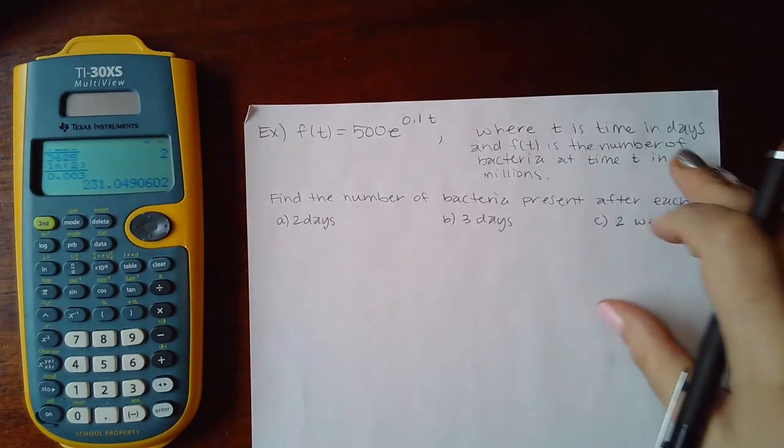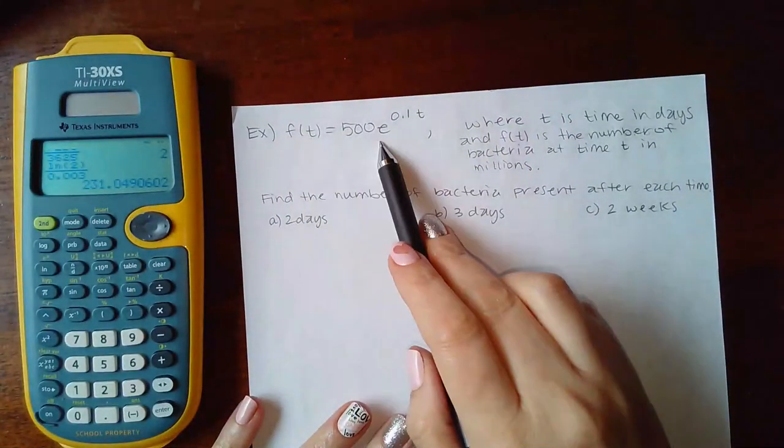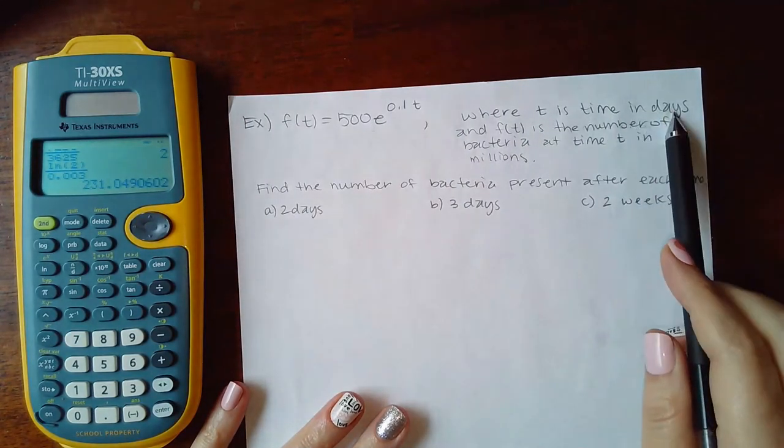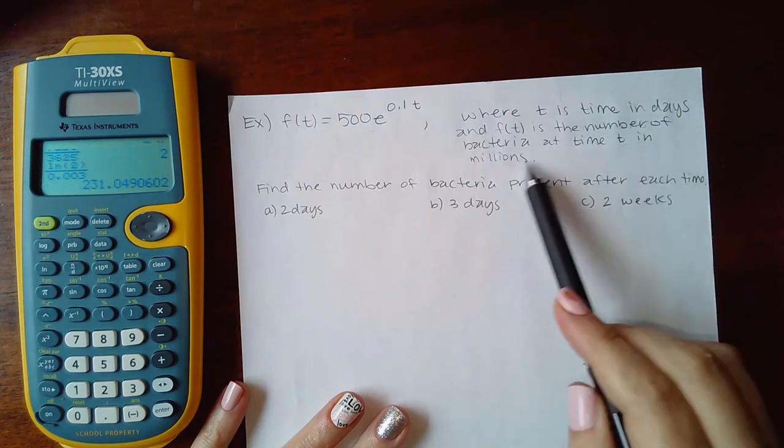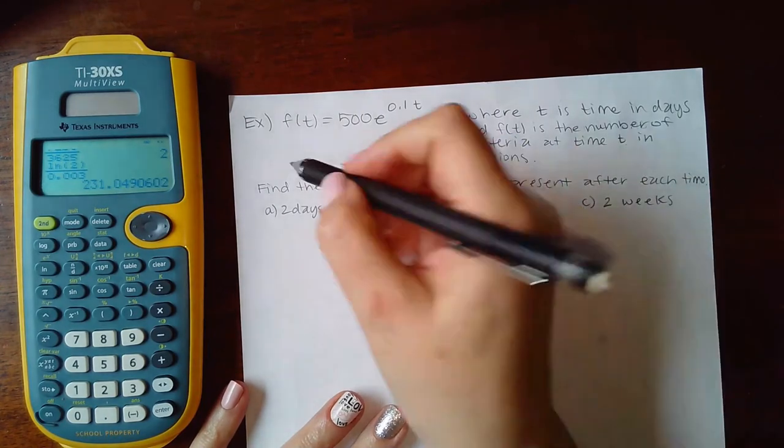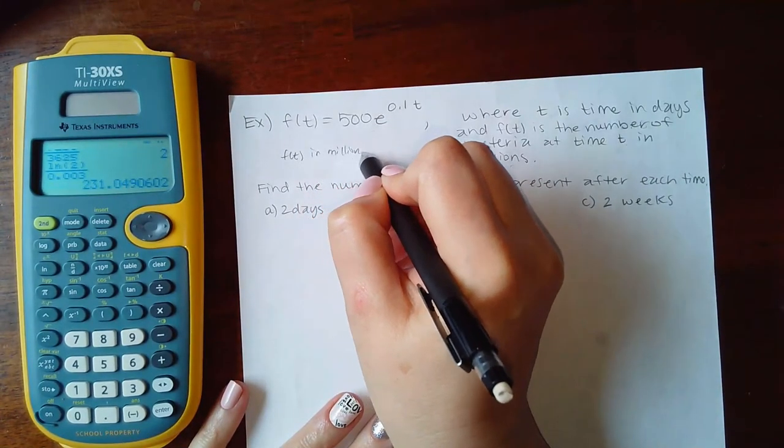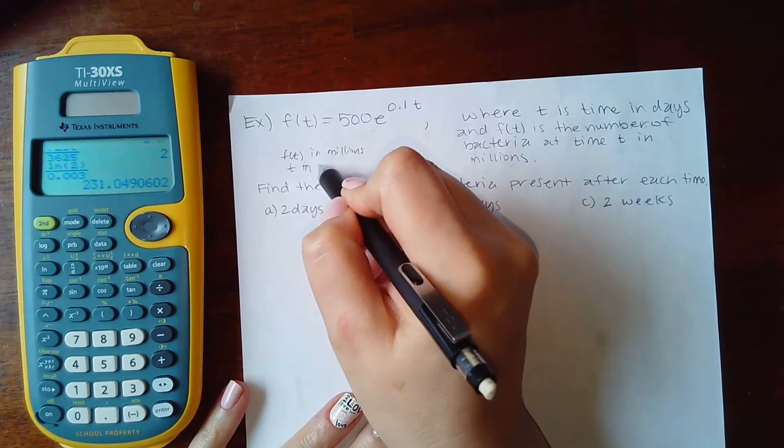Now we're on the last one. So this one gives us a function here and it says in this function t is the time in days and f(t) is the number of bacteria at time t in millions. So f(t) is in millions, which means the y value is in millions and t, which is the x value, is in days.